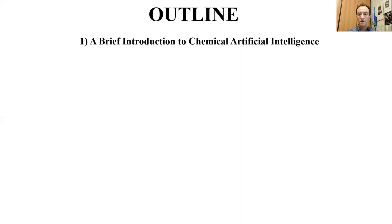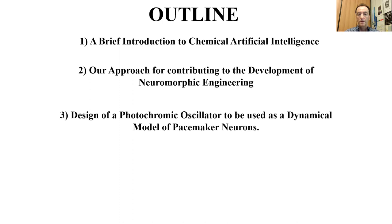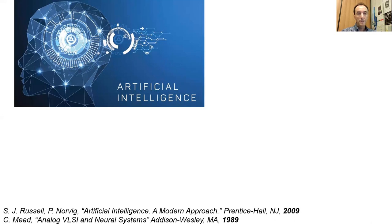The outline of my talk: first, I will make a brief introduction to chemical artificial intelligence. Then I will present an approach for contributing to the development of neuromorphic engineering approaches based on systems photochemistry, and we'll talk about the design of a photochromic oscillator to be used as a dynamical model of pacemaker neurons. I will give a few examples of optical communications involving photochromic compounds, and finally I will conclude and give some perspectives.